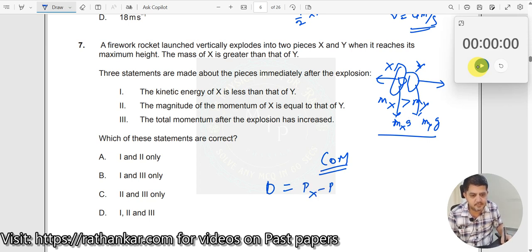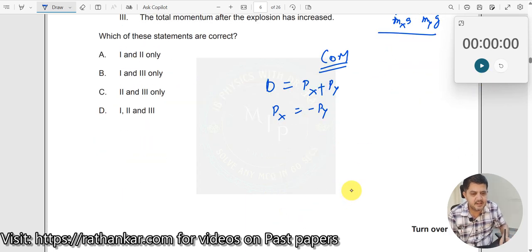So this will be P_X minus P_Y, or you can say P_X plus P_Y. Let me assume you don't know that it's going in opposite directions. So P_X equals minus P_Y. Now, since P_X equals minus P_Y, I will take the magnitudes alone, which means that M_X V_X is equal to M_Y V_Y.